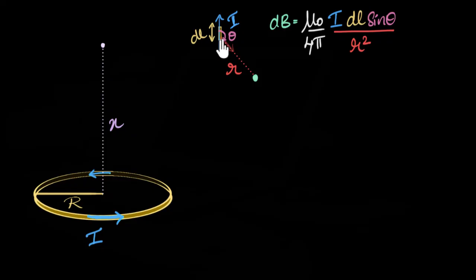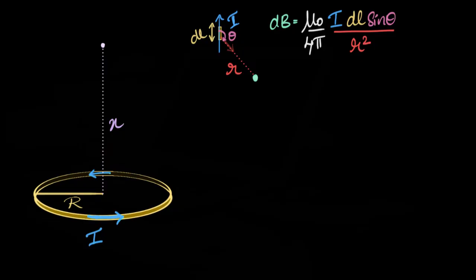So what we can do now is divide this entire loop into tiny pieces, calculate the magnetic field at this point due to each piece, and then integrate over the entire wire. That's the strategy we're going to use. To begin with, let's take a tiny piece of wire and just focus on that. Because this is in three dimensions, it'll be easier if I take a piece here so we can see everything.